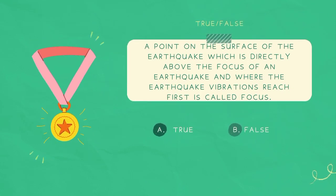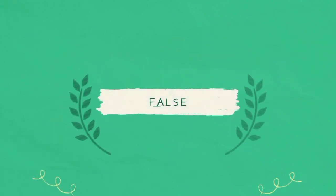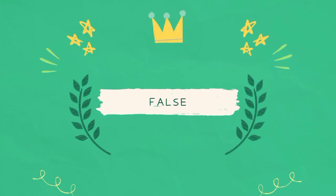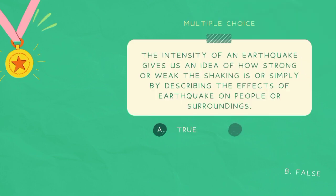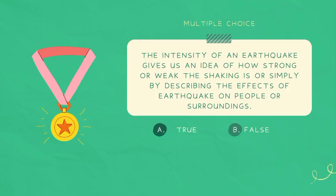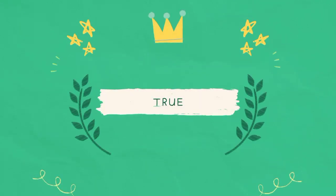Statement: A point on the surface of the earth which is directly above the focus of an earthquake and where the earthquake vibrations reach first is called focus. The answer is false. Statement: The intensity of an earthquake gives us an idea of how strong or weak the shaking is, or simply by describing the effect of the earthquake on people or surroundings. The answer is true.